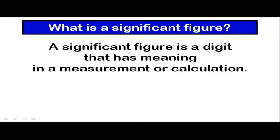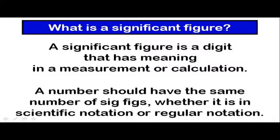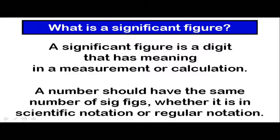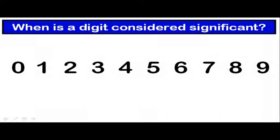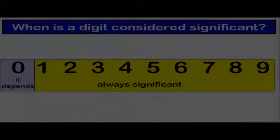So what is a significant figure? It is a digit that has meaning in a measurement or calculation, and you should realize that a number or a measurement should have the same number of sig figs whether it is written in scientific notation or regular notation. Out of all of the digits, zero through nine, the numbers one through nine will always be significant, and the number zero, it depends. Sometimes it is significant, and sometimes it is not.